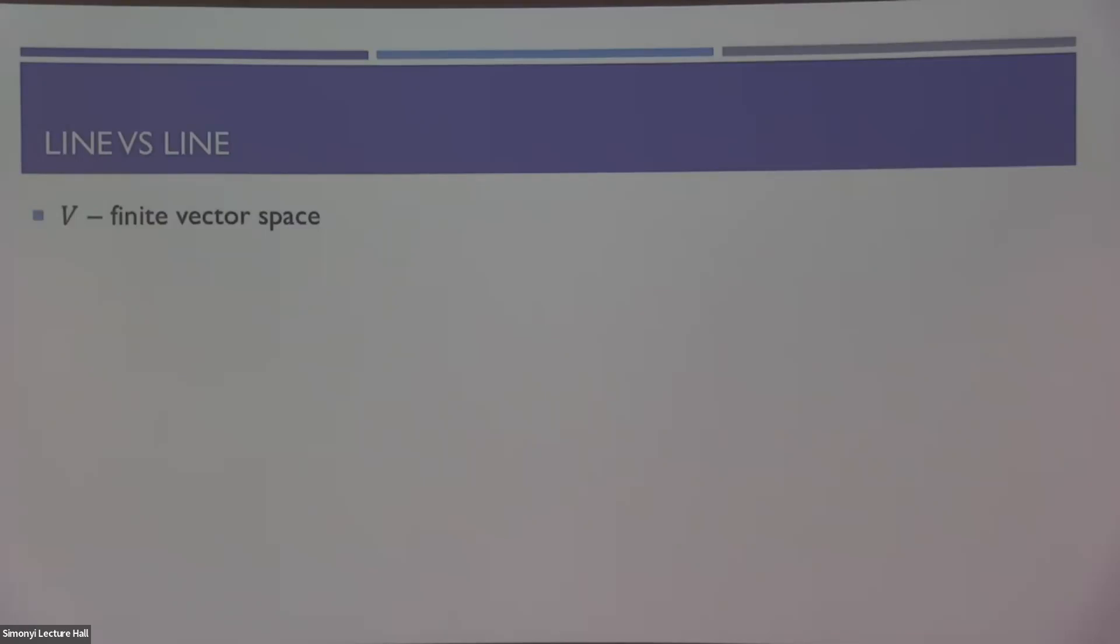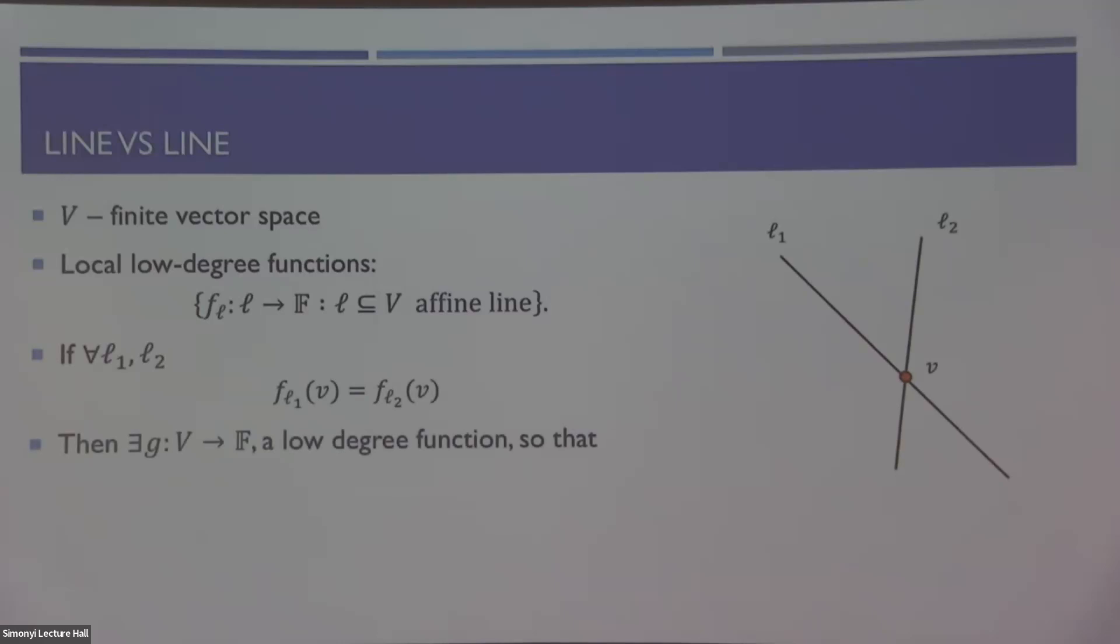The setup is as follows. We have some finite vector space V, and for every affine line L inside V, we have a low degree function defined only locally on the points inside that line L. If the set of local functions is consistent, namely if for every two lines that intersect on a point v, F of L1 and F of L2 agree on the assignment to that point v, then it is well known that there exists a low degree function G, so that every FL is in fact a restriction of this low degree function to that line L.